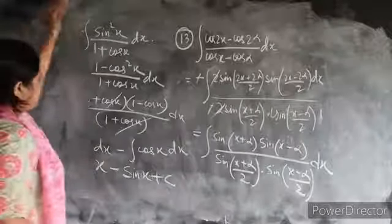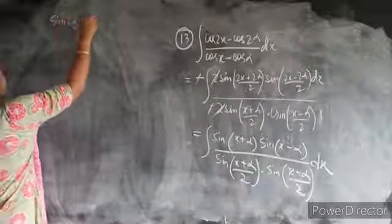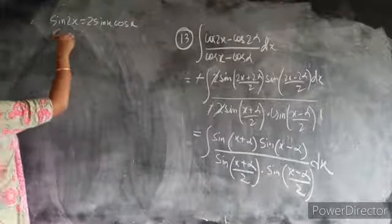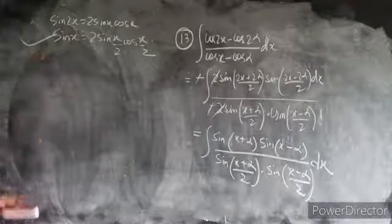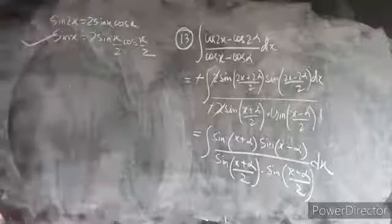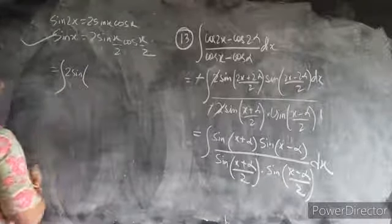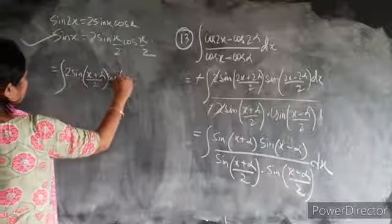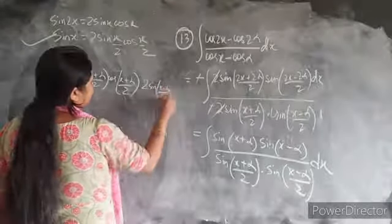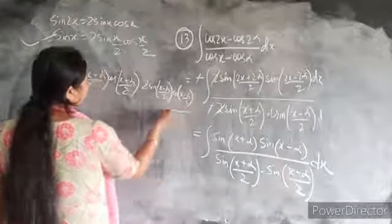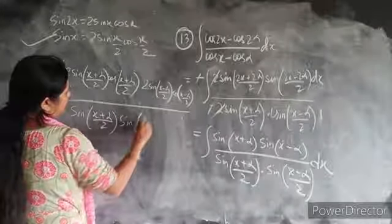Now applying the formula from class 11: sin2x equals 2 sinx cosx, so sinx equals 2 sin(x/2) cos(x/2). Applying this to the numerator: sin(x plus α) becomes 2 sin((x plus α)/2) cos((x plus α)/2), and similarly sin(x minus α) becomes 2 sin((x minus α)/2) cos((x minus α)/2), divided by sin((x plus α)/2) sin((x minus α)/2).